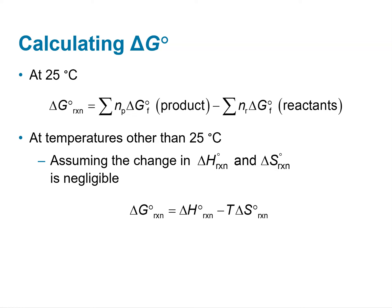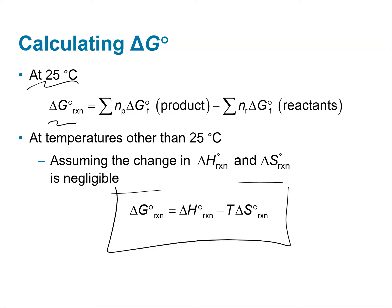This gives us two mechanisms to calculate ΔG° under standard conditions at 25°C: we can go straight to the table and use products minus reactants for free energy. However, if we're at temperatures other than 25°C, and assuming the change in enthalpy and entropy is relatively small — which is reasonable for small variations — we should use the relationship ΔG = ΔH − TΔS.